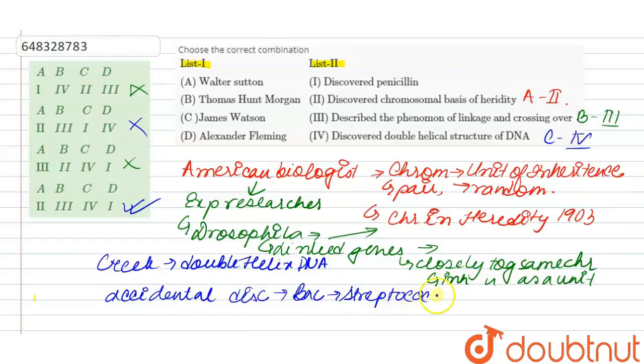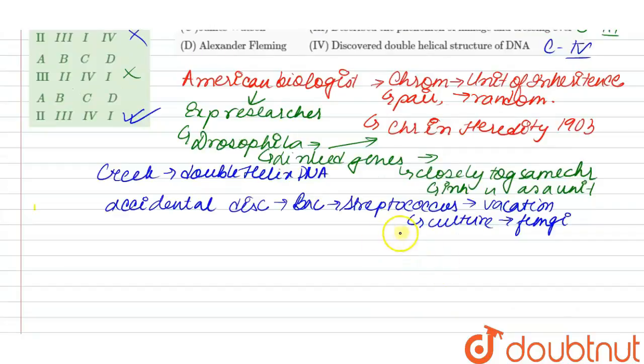After coming back, he saw that some mold of fungi has grown on the culture of bacteria. As a result of that, the bacteria has stopped growing and some part of it is dead. Then he realized that the mold have produced some sort of chemical substance that can kill this bacteria.